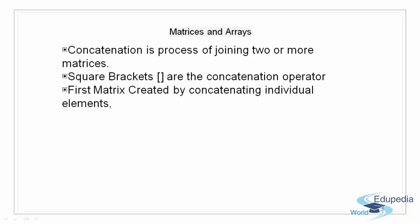Concatenation is a process of joining two or more matrices. Square brackets while defining the array are the concatenation operator. The first matrix that we created was by concatenating individual elements.